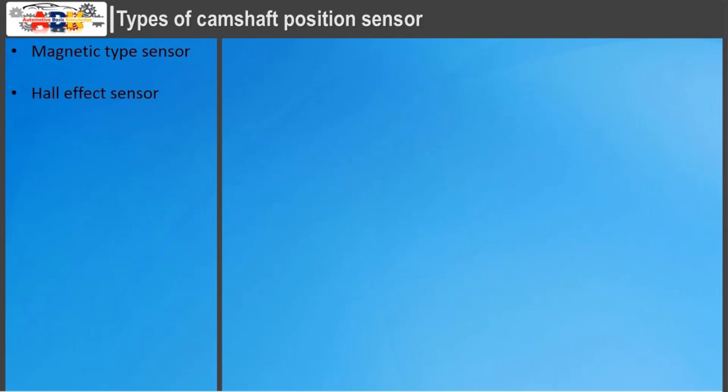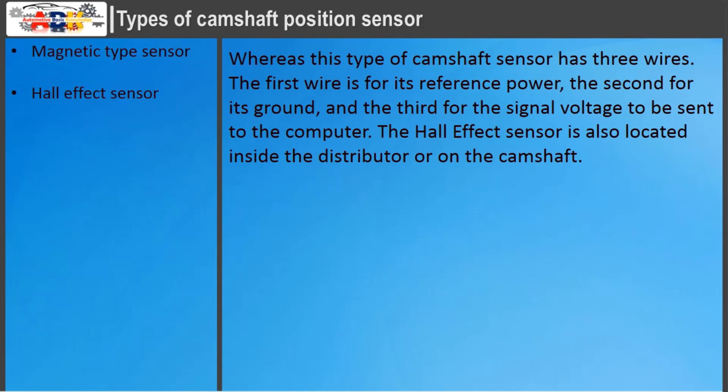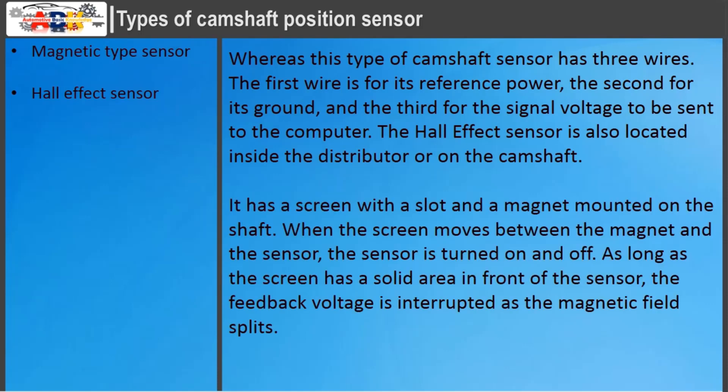The Hall Effect sensor type of camshaft sensor has three wires. The first wire is for its reference power, the second for its ground, and the third for the signal voltage to be sent to the computer. It is also located inside the distributor or on the camshaft. It has a screen with a slot and a magnet mounted on the shaft. When the screen moves between the magnet and the sensor, the sensor is turned on and off. As long as the screen has a solid area in front of the sensor, the feedback voltage is interrupted as the magnetic field splits.